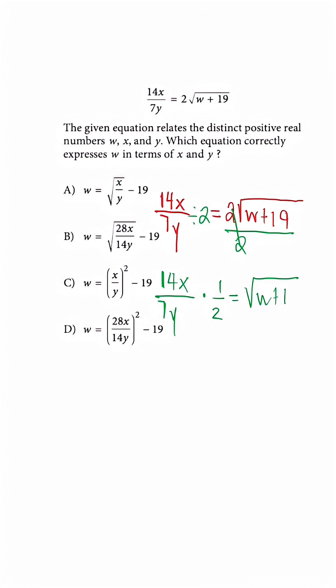So after we do this step, we're going to notice something. We're going to have 14x over 14y is equal to our radical W plus 19.